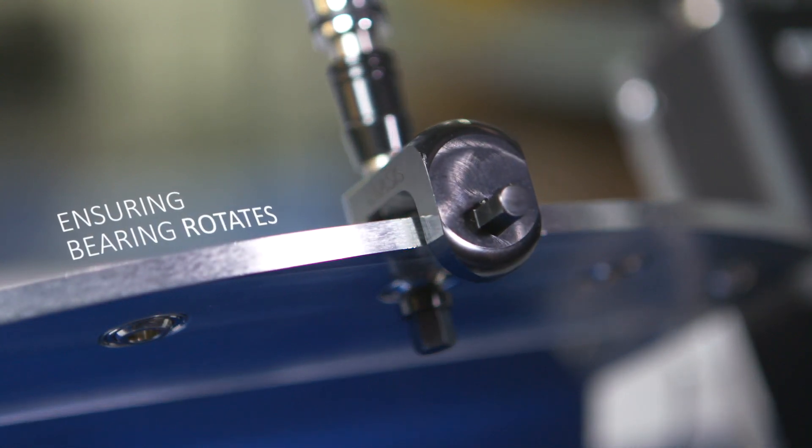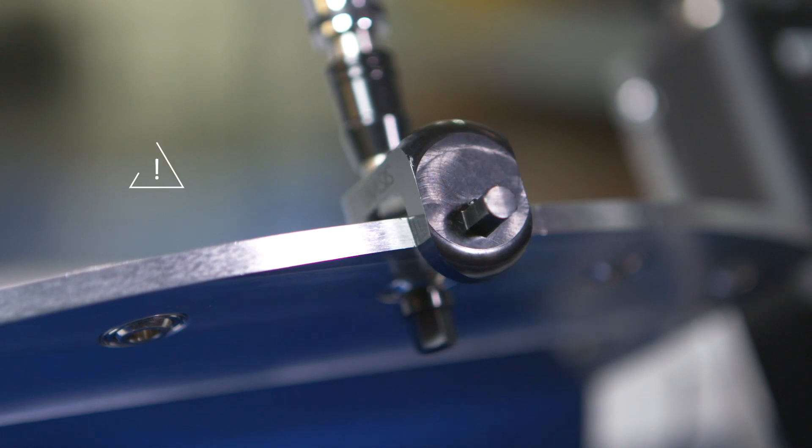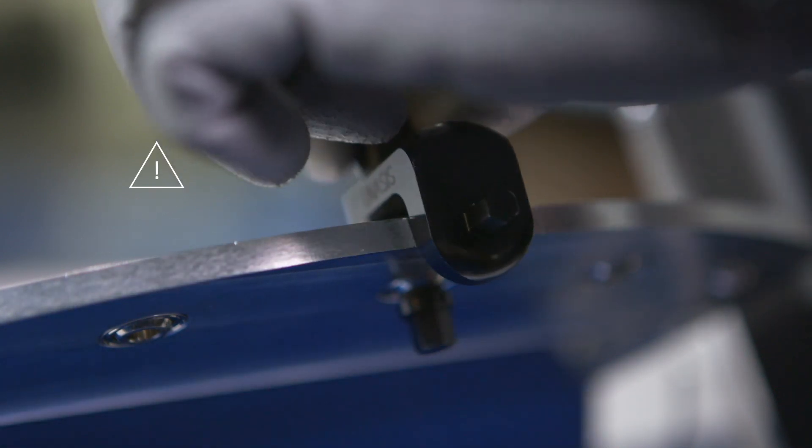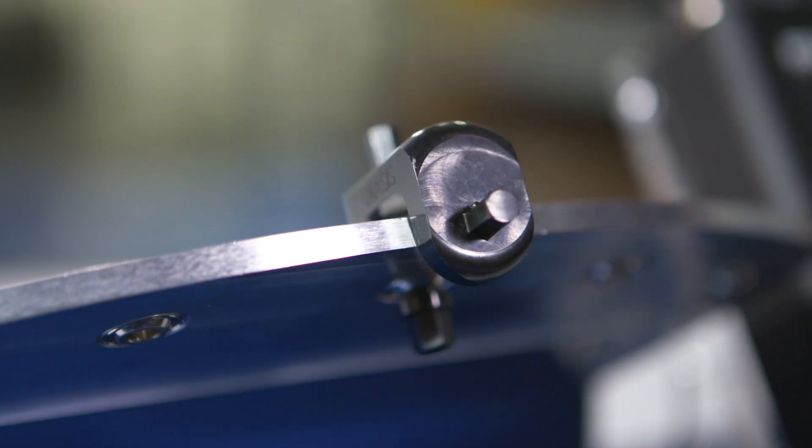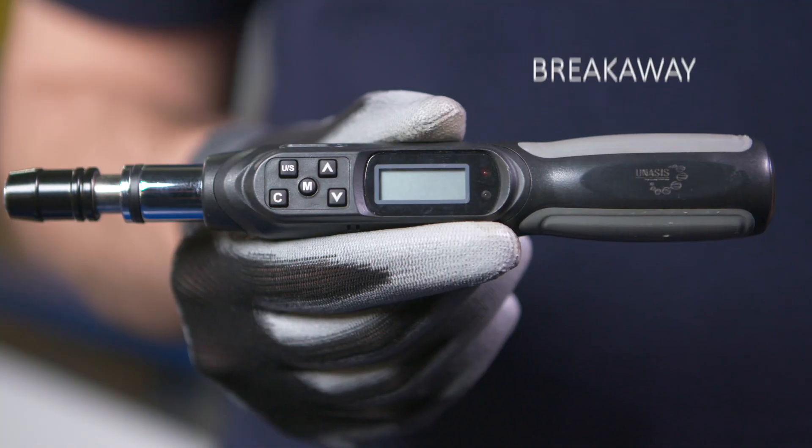Be careful to stop rotation before the tool touches the housing. If you contact the housing, the torque value will spike and the reading will be invalid. This is your breakaway torque value.